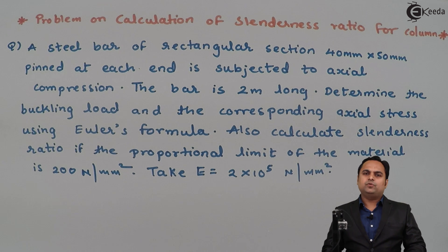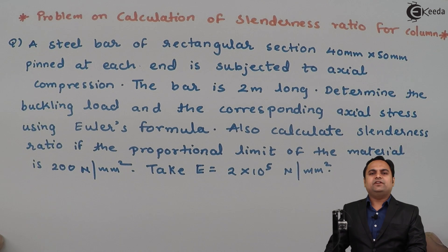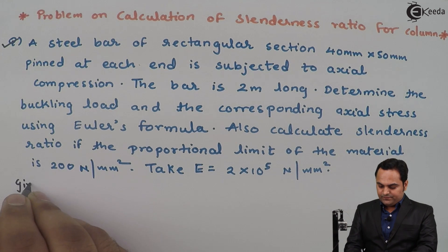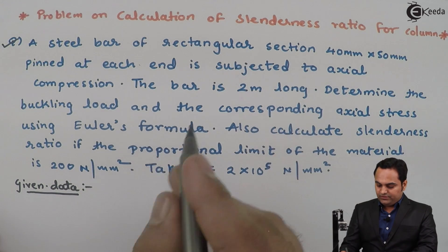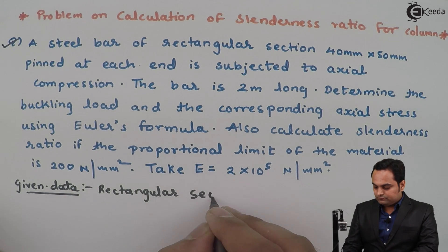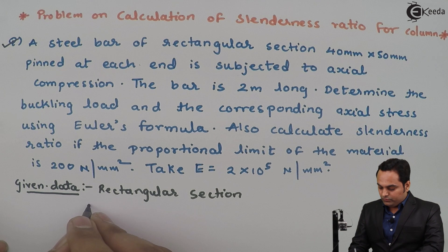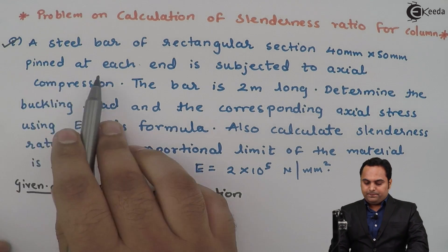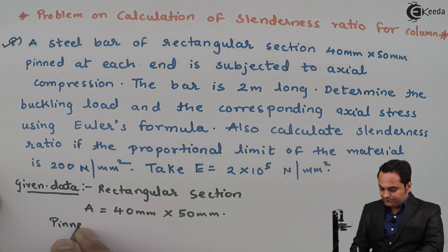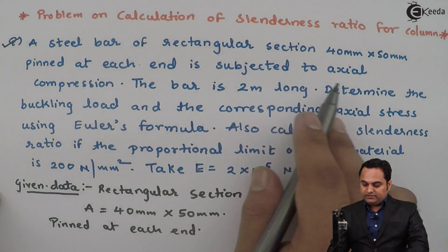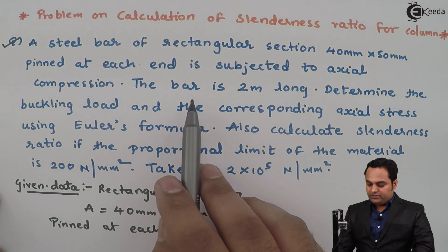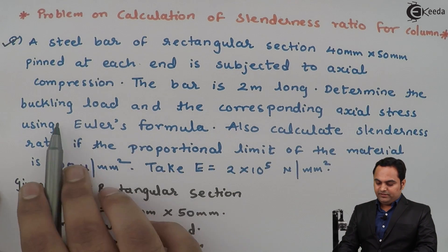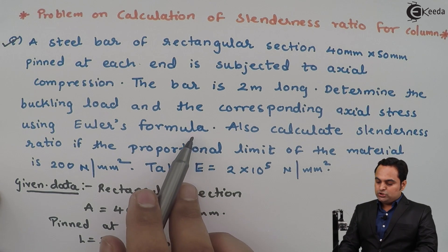In this video we will see a problem on calculation of slenderness ratio for a rectangular section column. We have a steel bar of rectangular section 40mm into 50mm. It is pinned at each end and subjected to axial compression. The bar is 2 meters long, which is 2000mm. We need to determine the buckling load and the corresponding axial stress using Euler's formula.